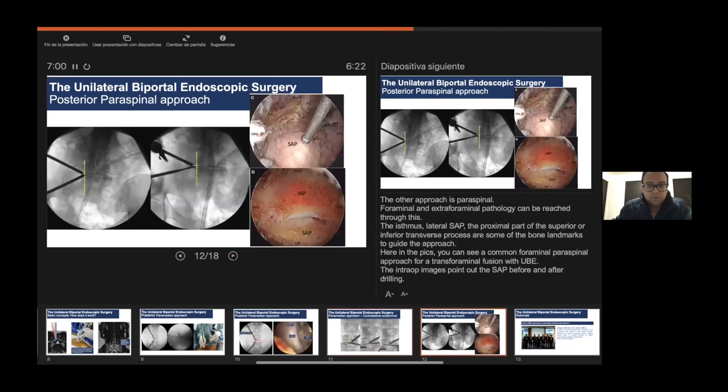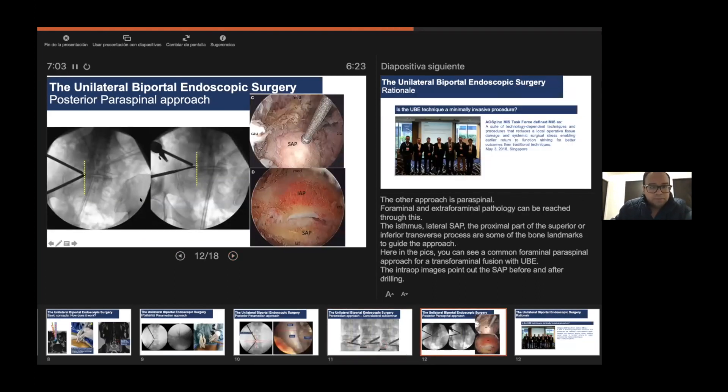Also the other approach is the paraspinal. The foraminal and extraforaminal pathology can be reached through this. The SAP moves laterally. The proximal part of the superior or inferior transverse process are some of the bone landmarks to guide the approach. Here in the pictures you can see common foraminal approach to perform a fusion through this biportal technique. In the intraoperative pictures you can see the SAP and after drilling the SAP you can observe how we can reach more medial aspect of the spine through this paraspinal approach.